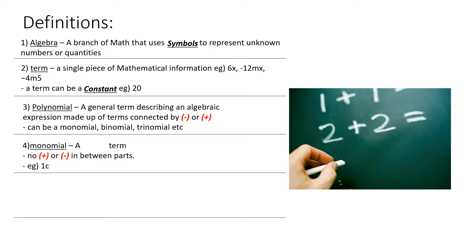Number 4, Monomial: a single term — no pluses or minuses in between the parts. Example: 1c. From this example there's really only one term here, so the blank here would be a single term.